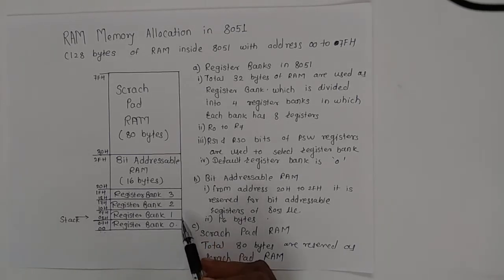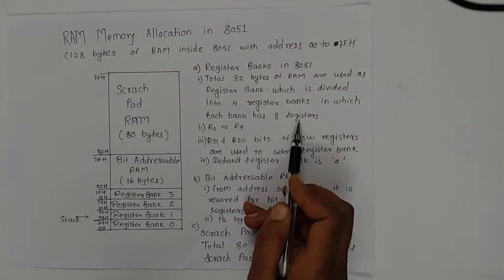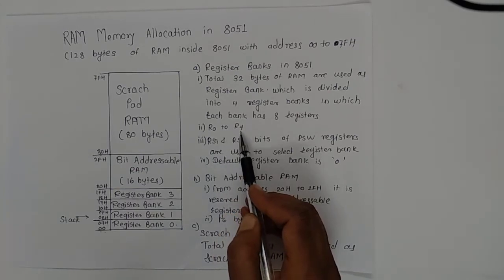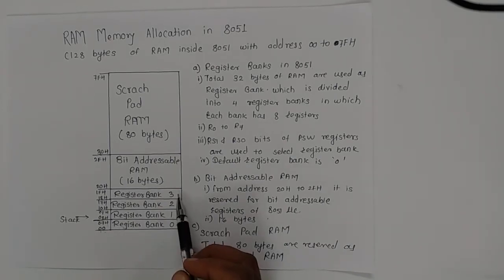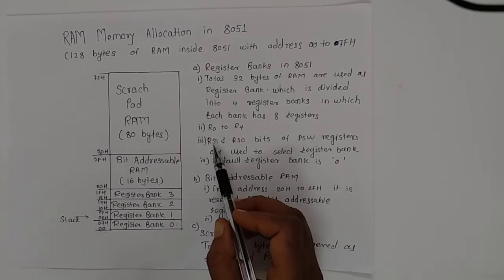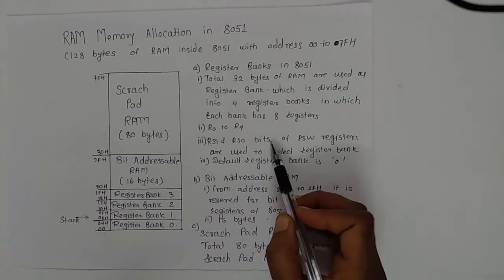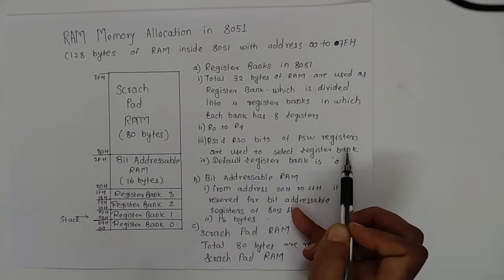Each register bank has 8 registers, from R0 to R7. For the four register banks, we need two bits for the selection of the register bank. These are RS1 and RS0, which are bits of the PSW register, and they are used to select the register bank.